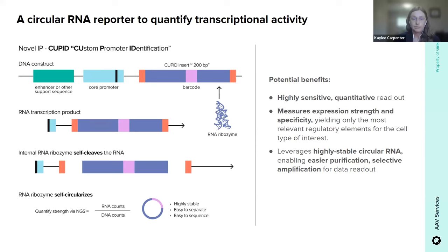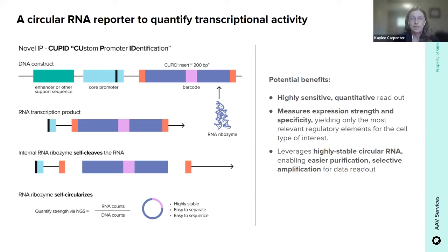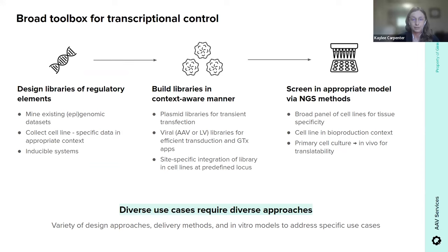Ginkgo's platform for regulatory element screening uses a circular RNA as the transcriptional readout when screening a library of regulatory elements. We design and build large libraries of enhancers, promoters, or some combination of both, which drive expression of an appropriately barcoded CUPID insert — CUPID stands for Custom Promoter Identification — which encodes a proprietary hairpin ribozyme flanked by two additional ribozyme sequences. When these barcoded libraries are introduced into cells of interest, the resulting barcoded transcription occurs and the adjacent ribozymes liberate the barcode-containing CUPID insert, which then self-circularizes. We love these circles because they're highly stable and easy to separate and sequence, giving us a very quantitative readout normalized to the amount of DNA we delivered.